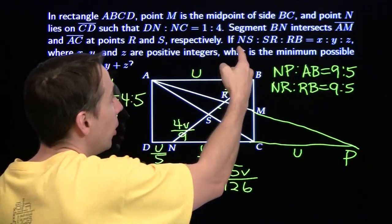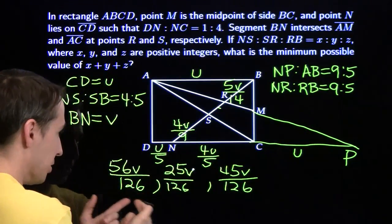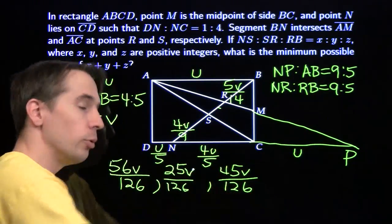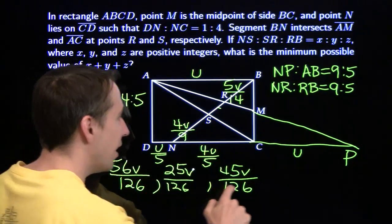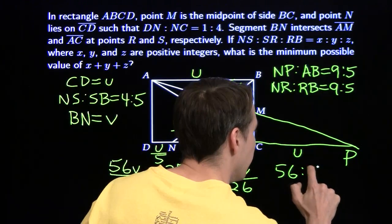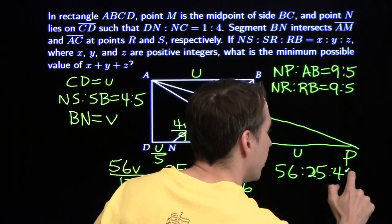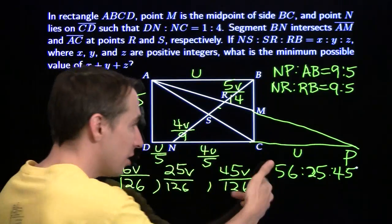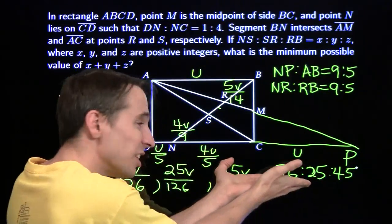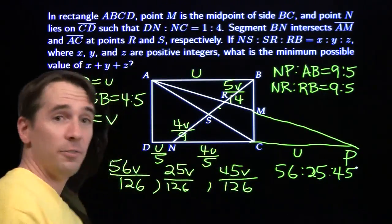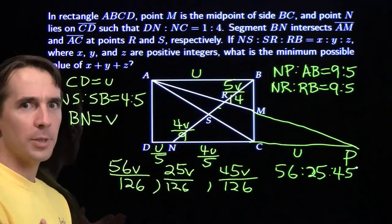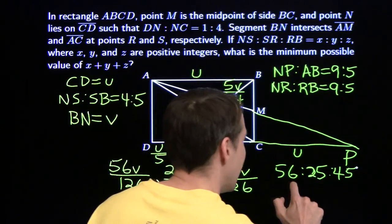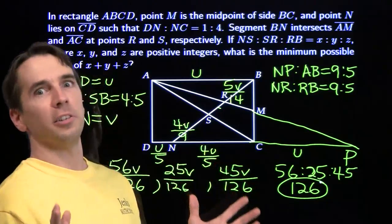Now we're ready to solve the problem. We want the ratio NS to SR to RB. Multiplying through by 126 and dividing out V gives us integers: 56, 25, and 45. We can't reduce these further by a common factor, so this is our simplest form. Adding them: 25 plus 45 is 70, plus 56 gives 126. So these three numbers add to 126, and we're done — because of Harvey.